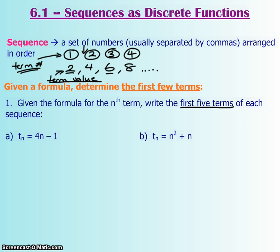To find your first term, you're going to go t₁, so it's like a little subscript. And then, since your n is 1, you're going to sub in 1 for your n. So 4 times 1 minus 1 is just 3. So your first term's value is 3.